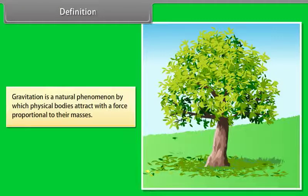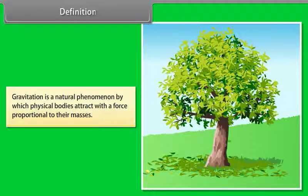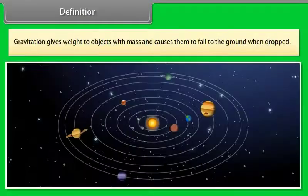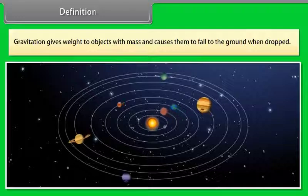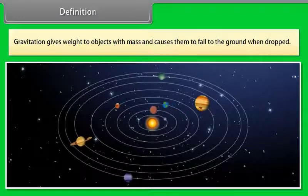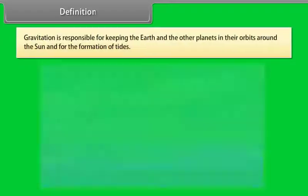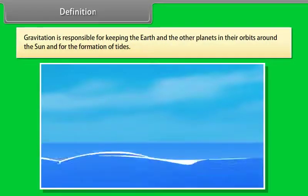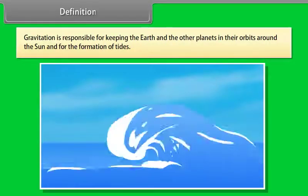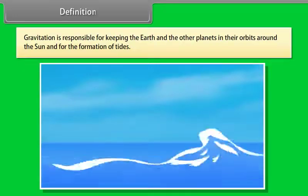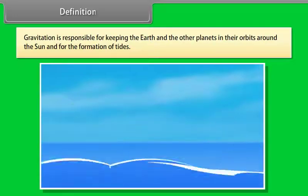Gravitation is a natural phenomenon by which physical bodies attract with a force proportional to their masses. Gravitation is most familiar as the agent that gives weight to objects with mass and causes them to fall to the ground when dropped. Gravitation is responsible for keeping the earth and the other planets in their orbit around the sun and for the formation of tides.